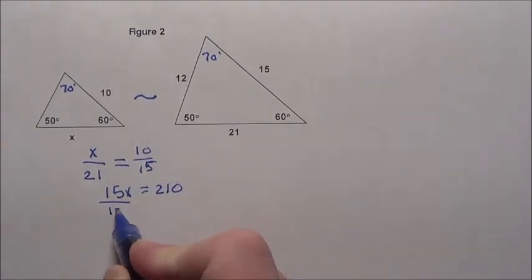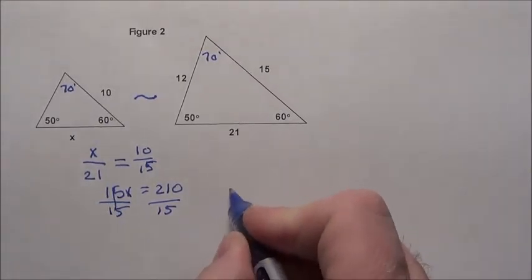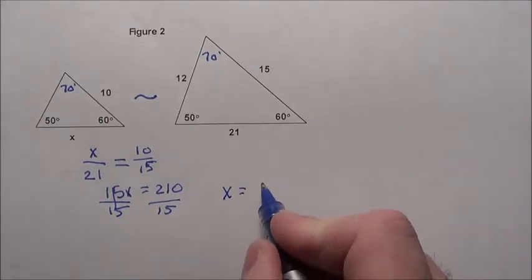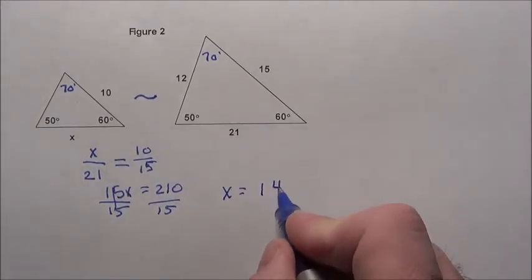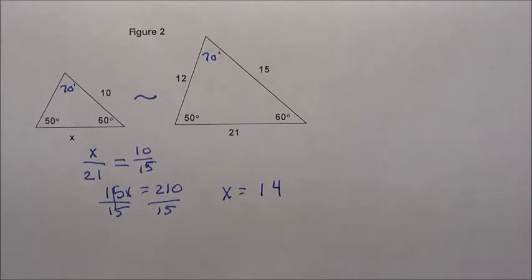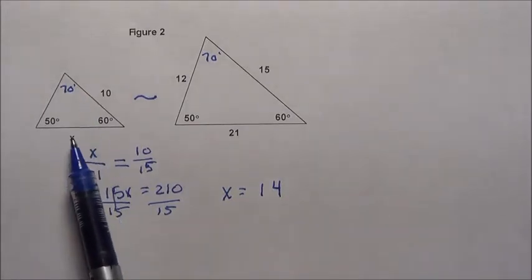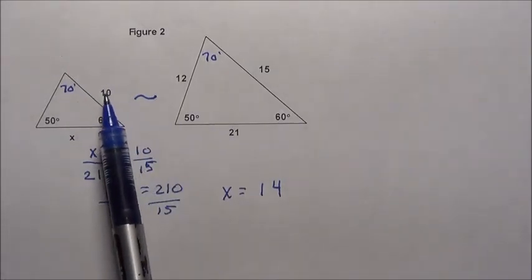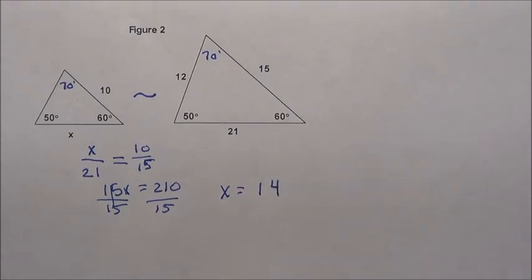To find x I simply divide by 15. 15 goes into there one whole time, 6 left over. It looks like I got 14. x will be 14. This length of this triangle right here, that leg right there must be 14, because 14 is to 21 the same as 10 is to 15.